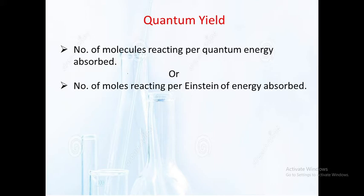So quantum yield — quantum yield matlab kya hai? Photochemical reaction hogi. Photochemical reaction ke liye kya chahiye? Hame sunlight chahiye. So sunlight kya karega — reactant absorb karega aur product tayar karega. Matlab is reaction ke liye hame starting mein light lagti hai, photons of energy — sunlight.